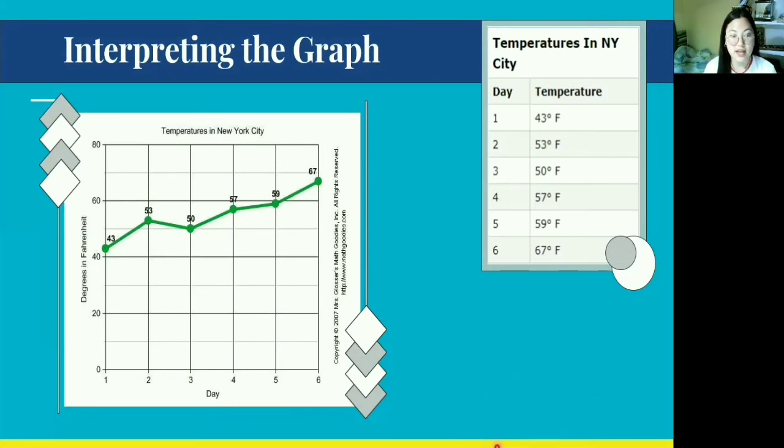I have an example of a broken line graph. It is written in the title: temperatures in New York City. Over here, we have tabulated data for six days; the temperature in New York City was recorded.